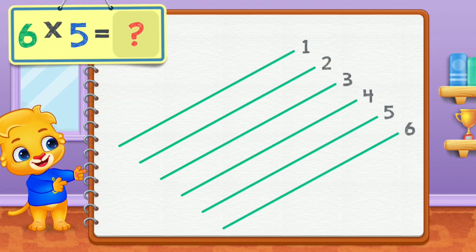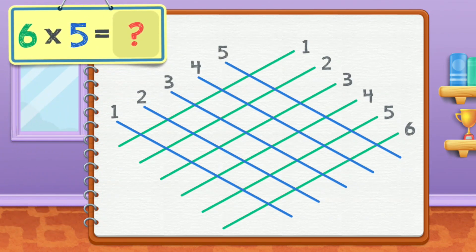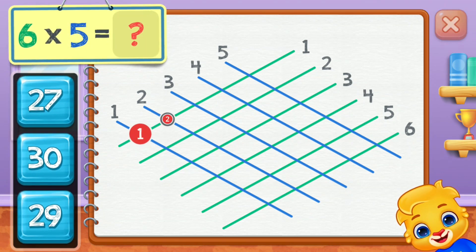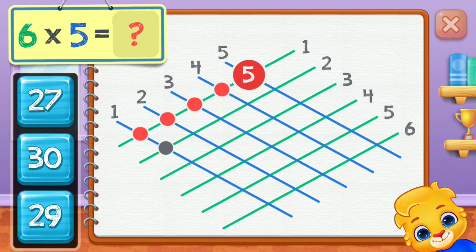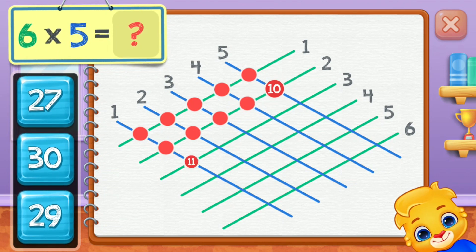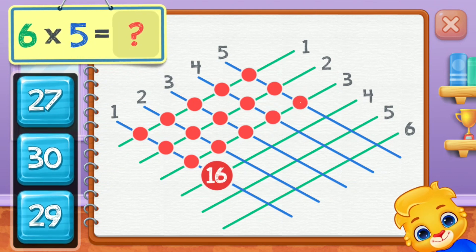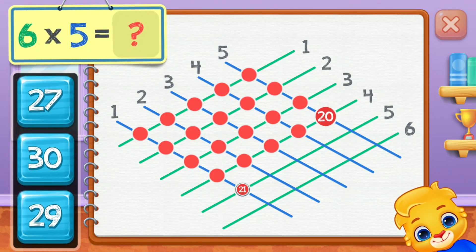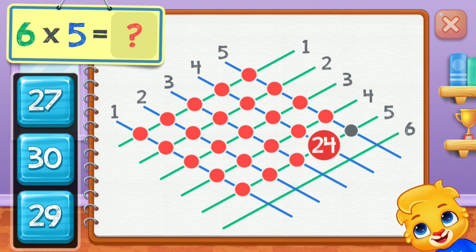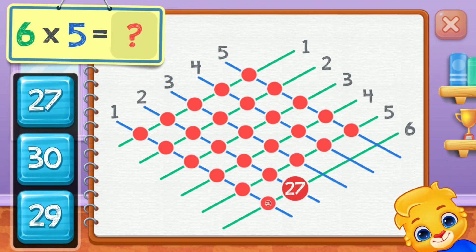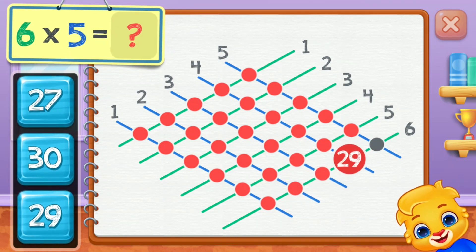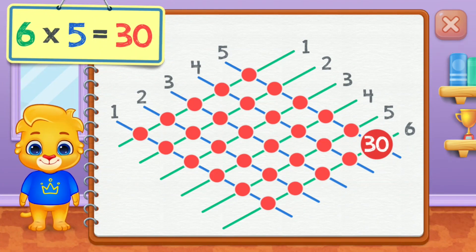Six times five equals... One, two, three, four, five, six, seven, eight, nine, ten, eleven, twelve, thirteen, fourteen, fifteen, sixteen, seventeen, eighteen, nineteen, twenty, twenty-one, twenty-two, twenty-three, twenty-four, twenty-five, twenty-six, twenty-seven, twenty-eight, twenty-nine. Six times five equals thirty.